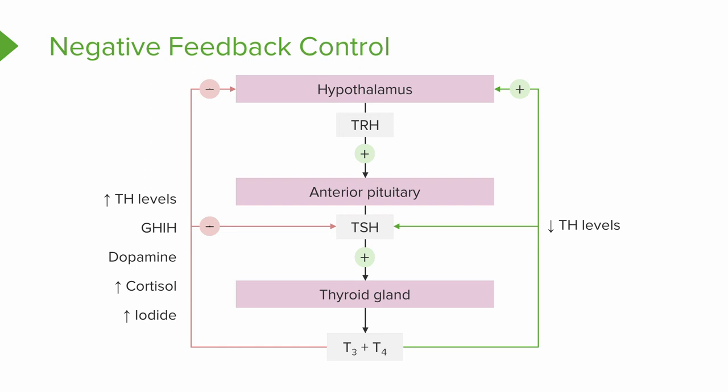Hypothalamic thyrotropin-releasing hormone can sometimes overcome this negative feedback system in cases such as pregnancy or exposure to cold, especially in infants.